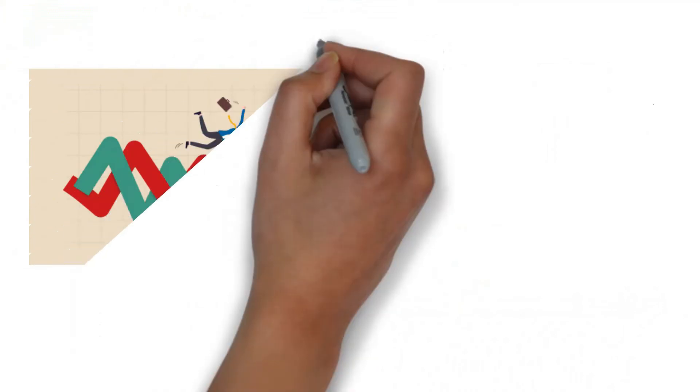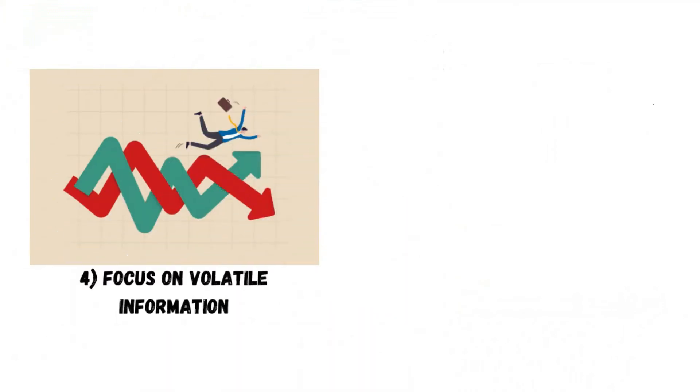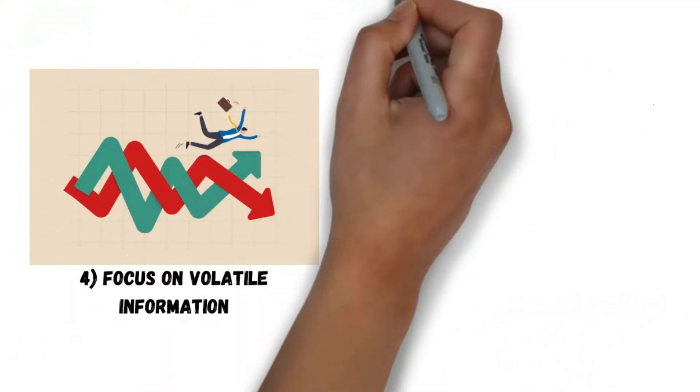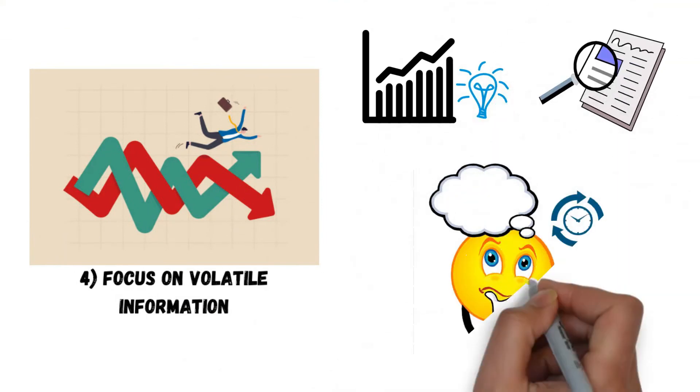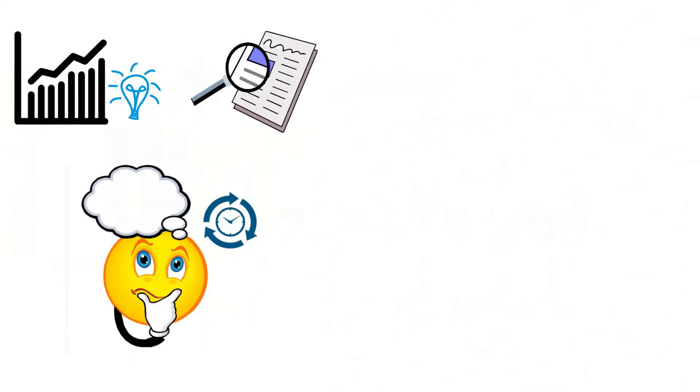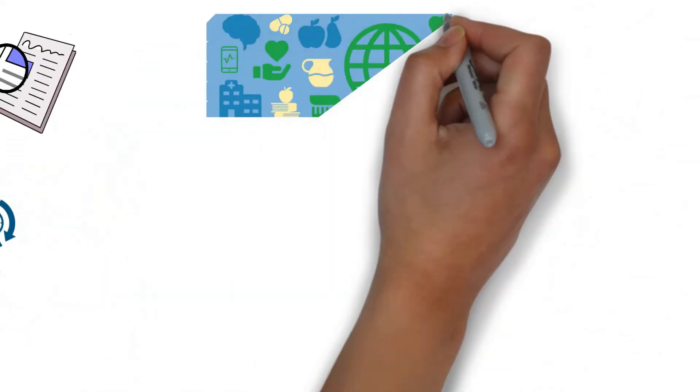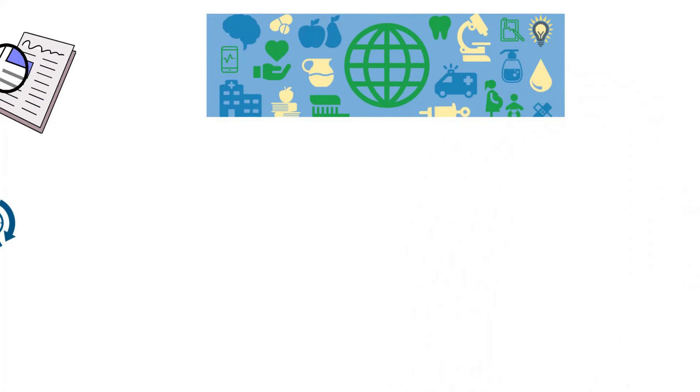4. Focus on volatile information. Volatile information refers to those facts and statements that you seem to have a hard time remembering.